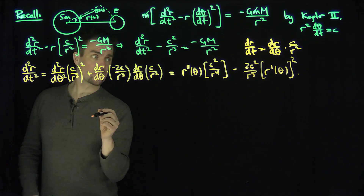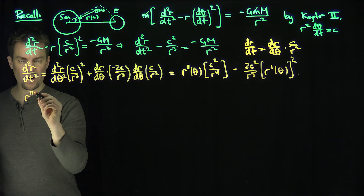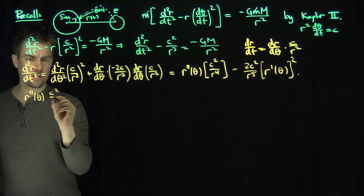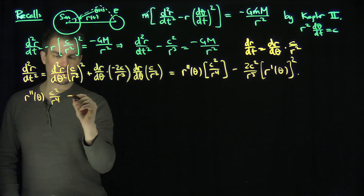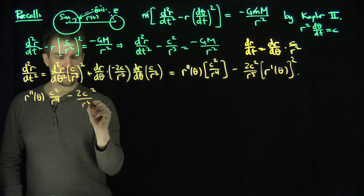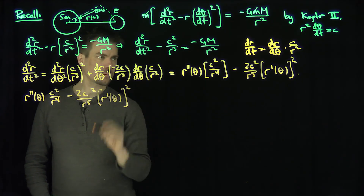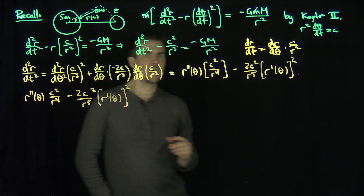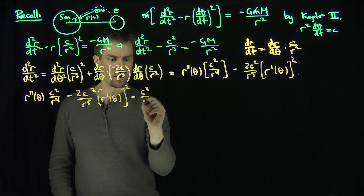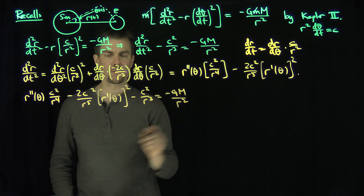Substituting into our differential equation, we get: r''(θ) times c²/r⁴ minus 2c²/r⁵ times (r'(θ))² minus c²/r³ equals negative Gm over r squared. That looks like a tremendous mess.